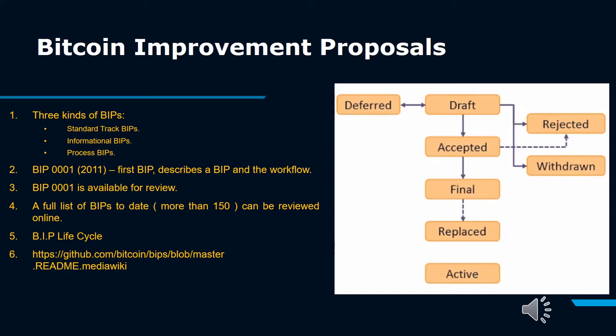3. Process BIP: These types of BIPs describe or propose a change in the process. They are similar to Standard Track BIPs and require community consensus. They can't be ignored, but unlike Standard Track BIPs, they intend to be applied outside the Bitcoin protocol. An example of this is BIP-2.